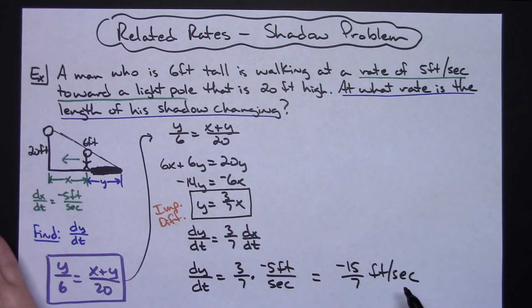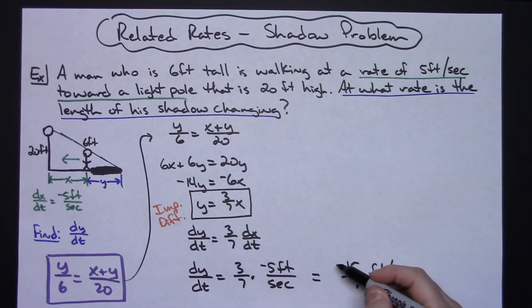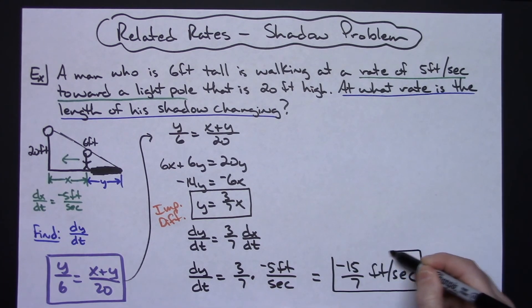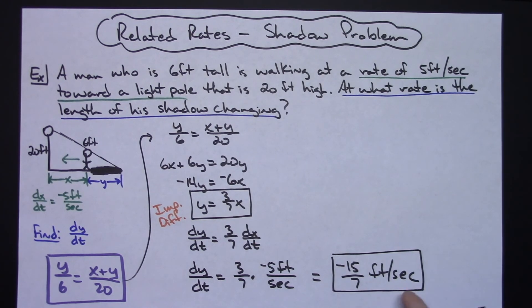Which means he's walking towards the light pole and the length—the rate at which it is shrinking—it's shrinking so it will be negative and that's what that's indicating right there. So when the man is walking toward the light pole at five feet per second, the length of his shadow is shrinking at—you can say shrinking at 15/7 feet per second, or you could say it is changing at a rate of negative 15/7 feet per second.